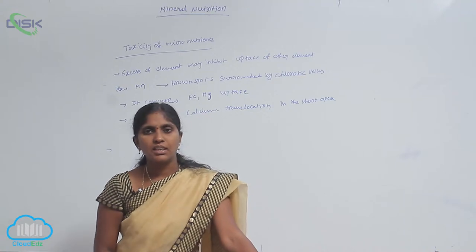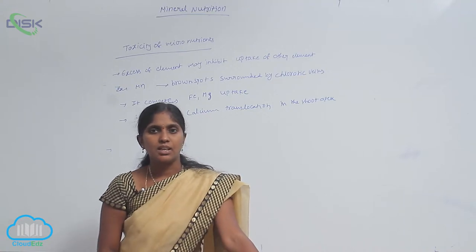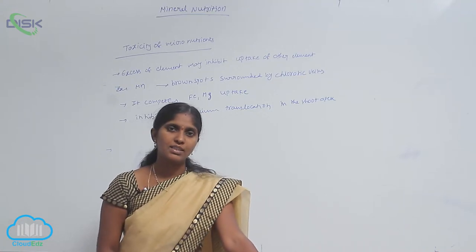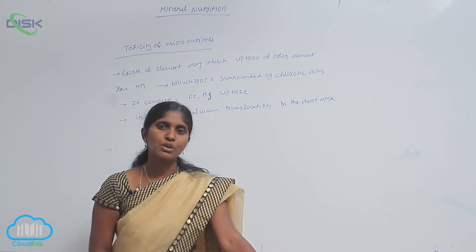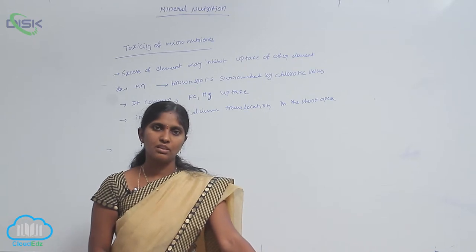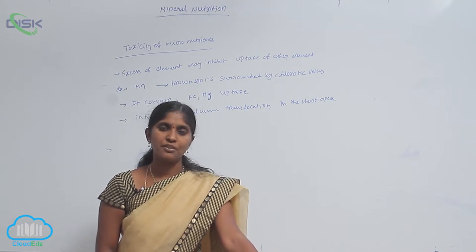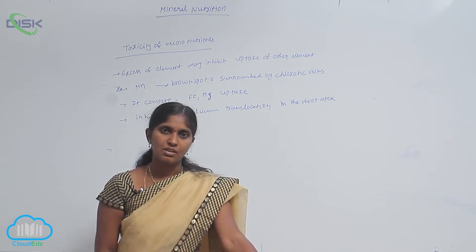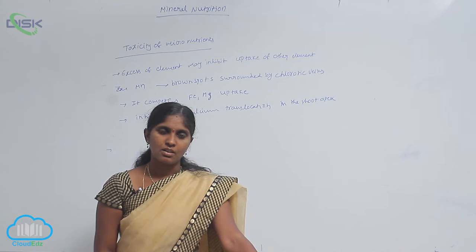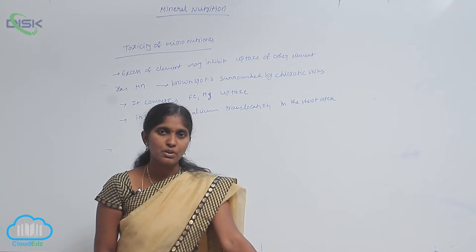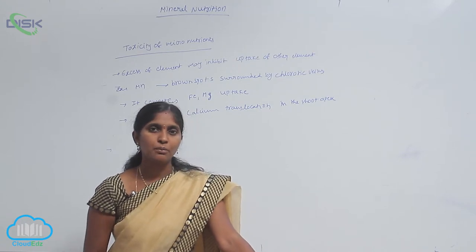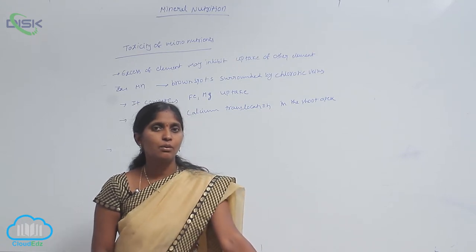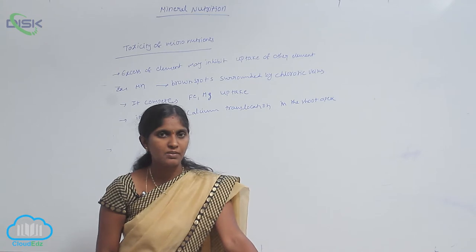Manganese toxicity appears as brown spots on the surface of the leaves. These brown spots are surrounded by chlorotic veins of the leaves.